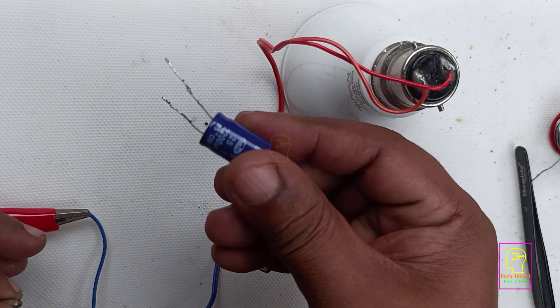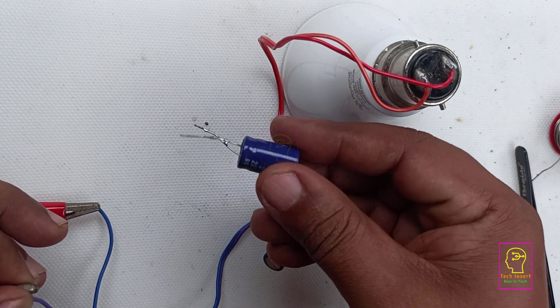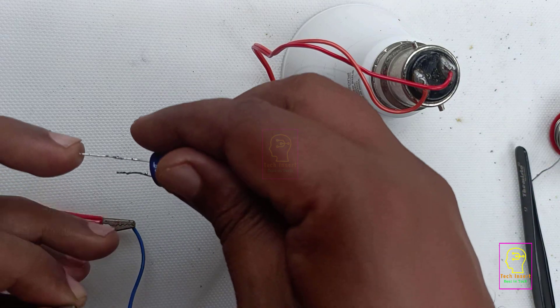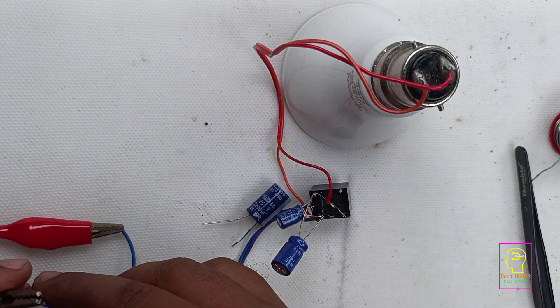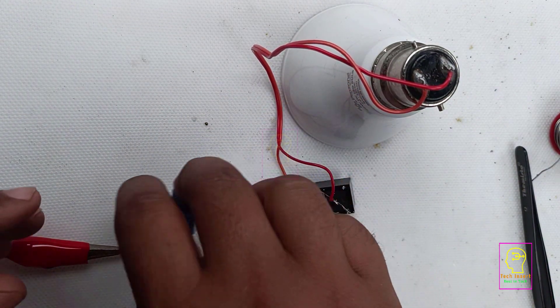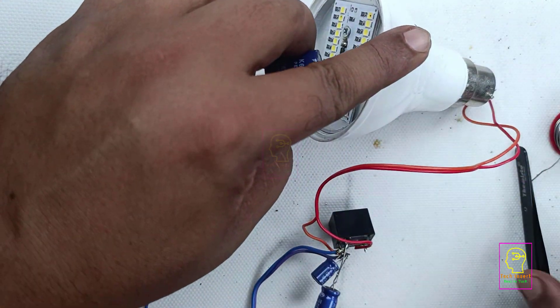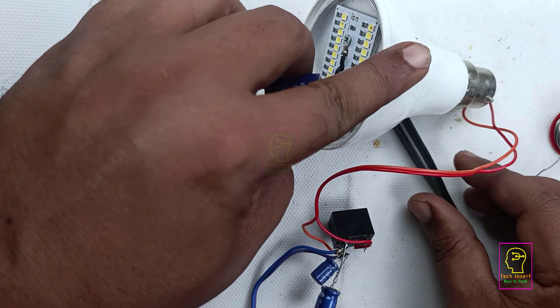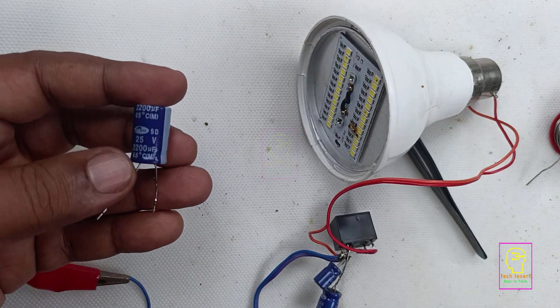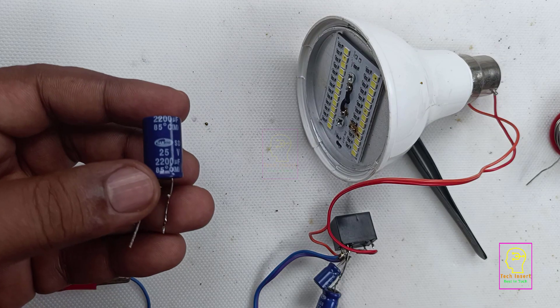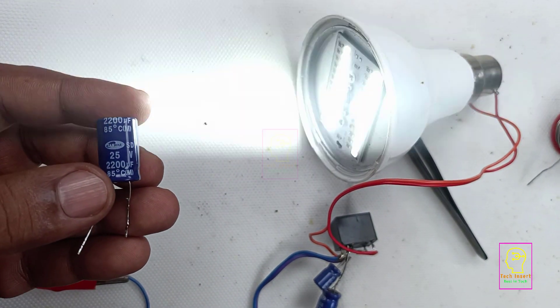Now I will attach this 2200 microfarad capacitor along with the existing capacitor. I am not soldering this capacitor to the existing one. Instead, I am just holding the capacitor using my hand and will touch the terminals to the existing capacitor terminals. You can even try using a 4700 microfarad capacitor. The flickering has reduced even more.